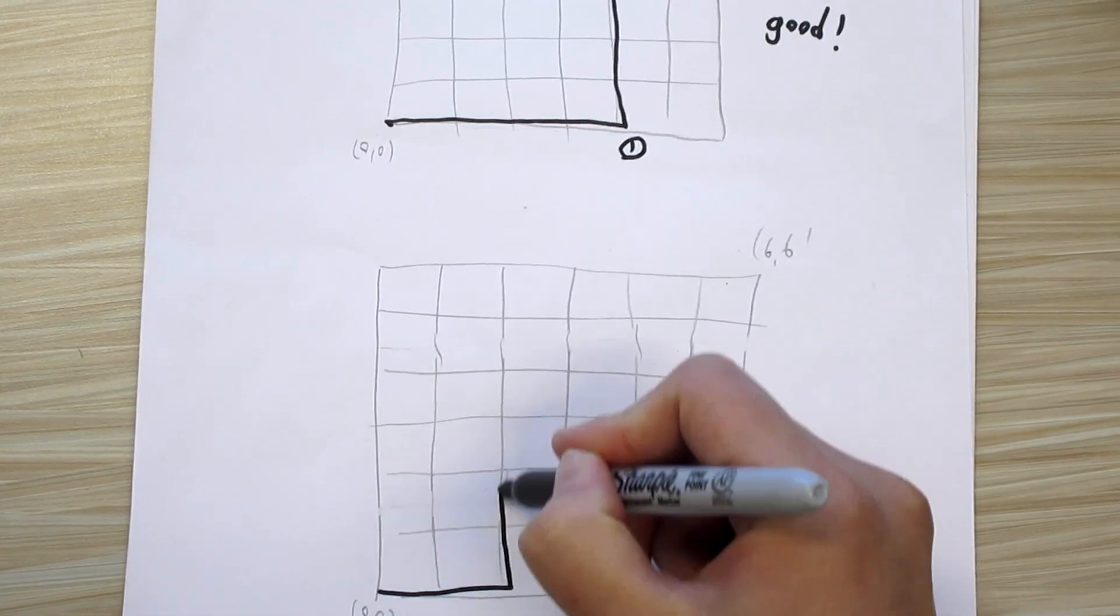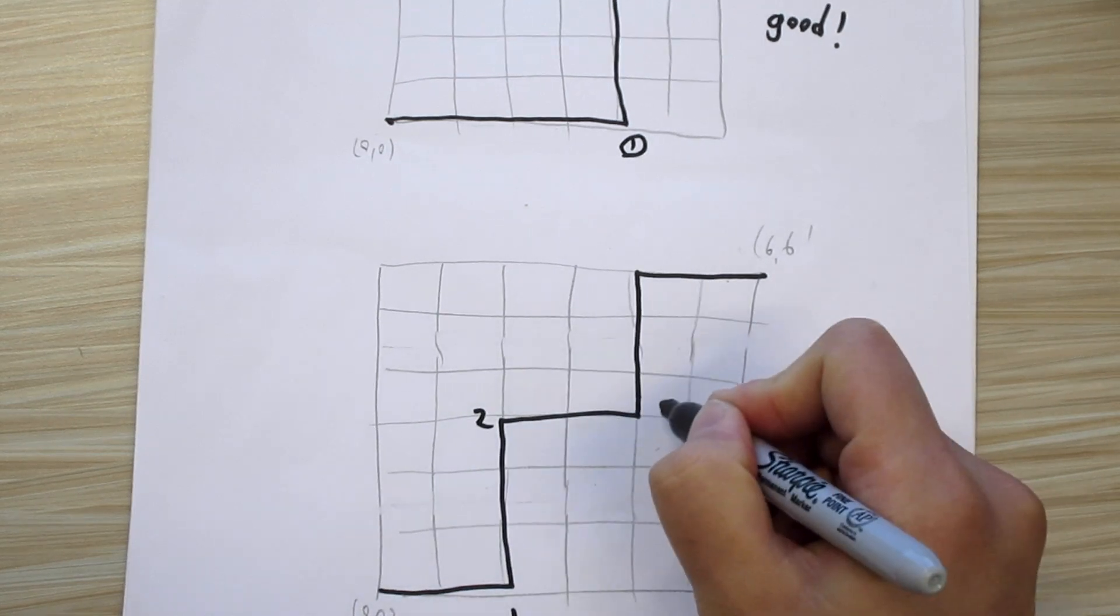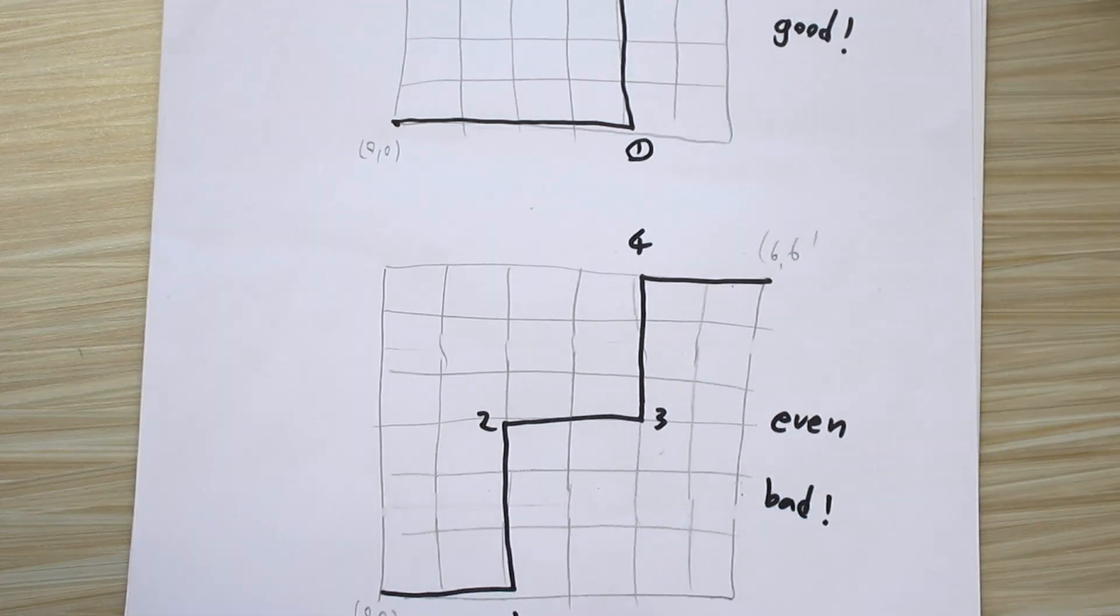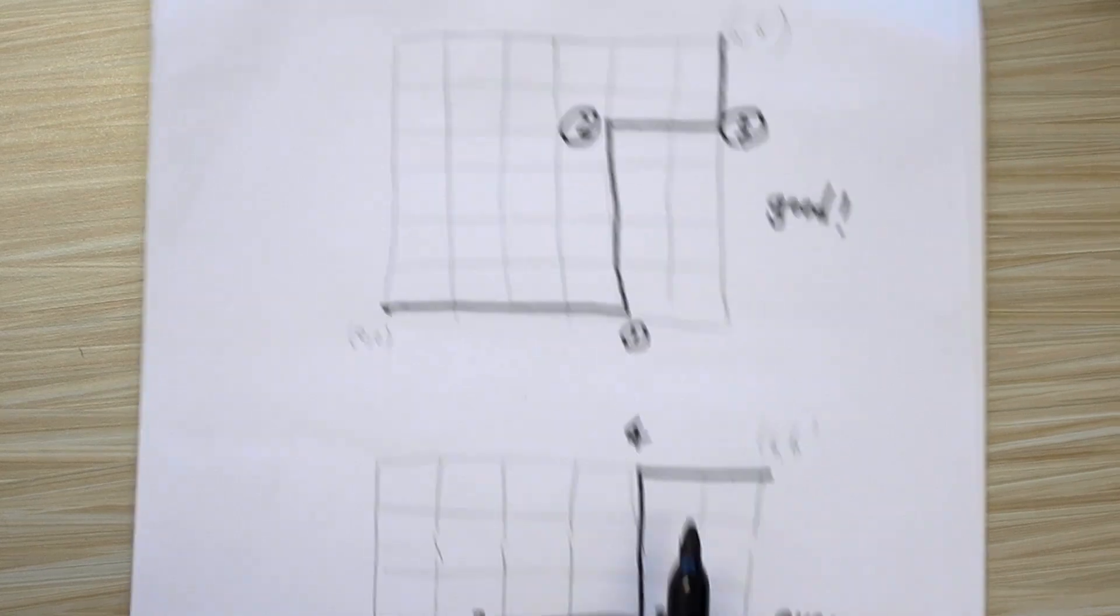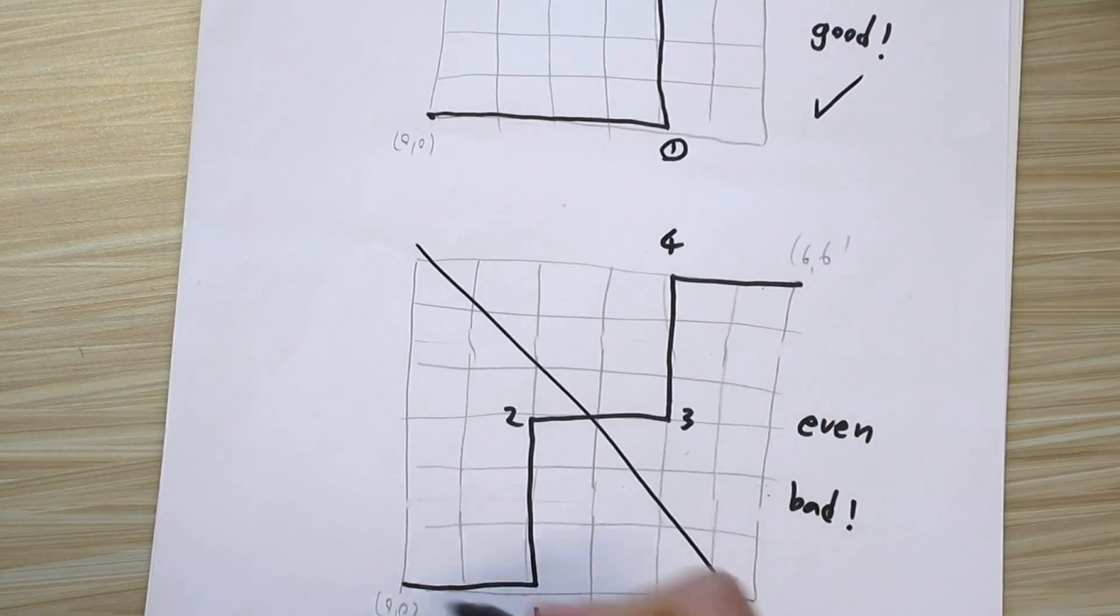But if you walk like this, then how many times you turn, you turn 1, 2, 3, 4, this is even, so this is bad. Alright, you don't want to turn 4 times to get (6,6), you only want to turn odd number of times. So, this is good, this is bad.